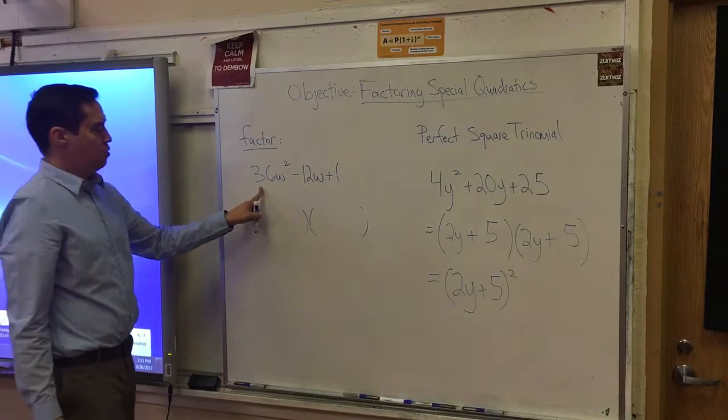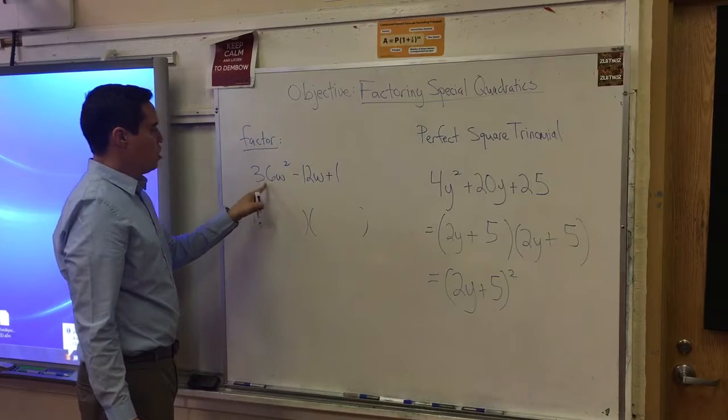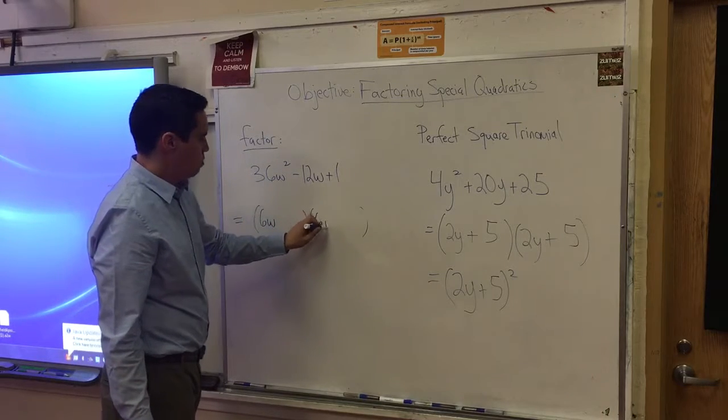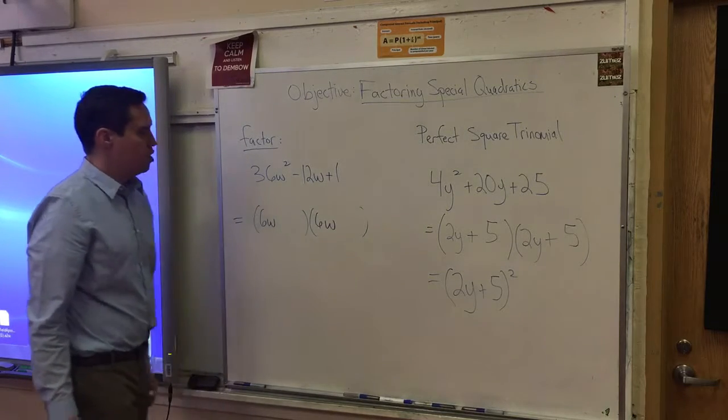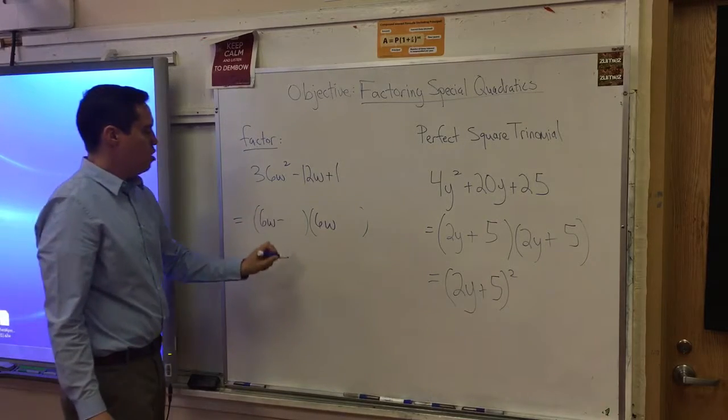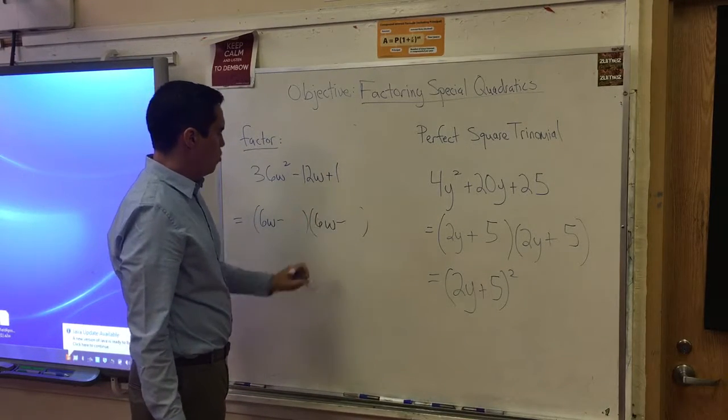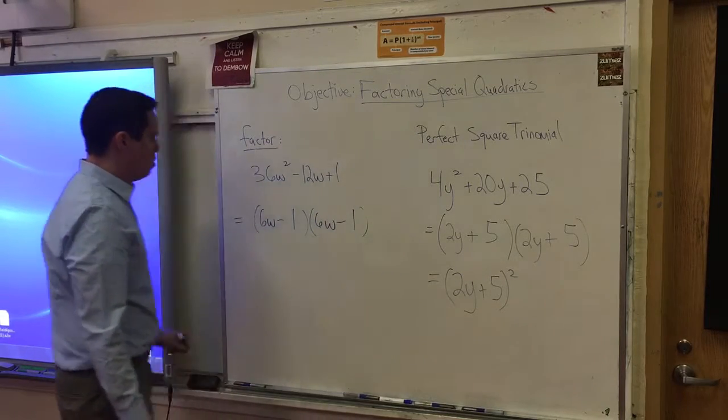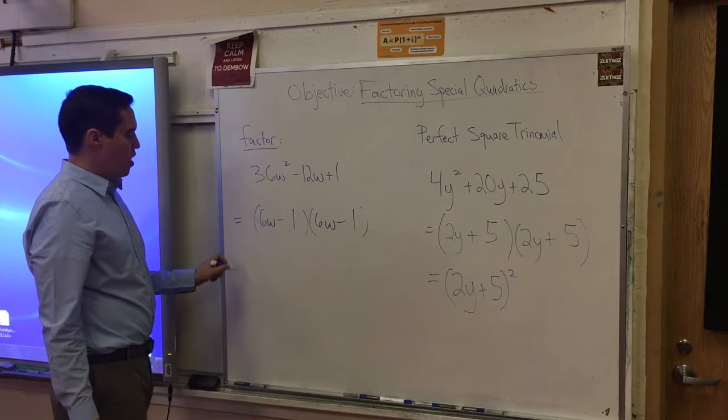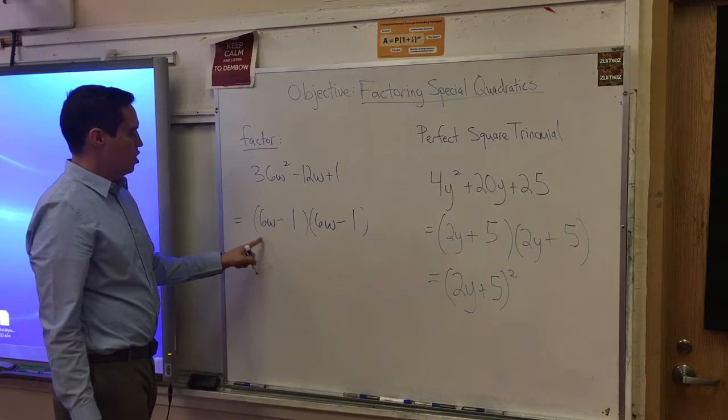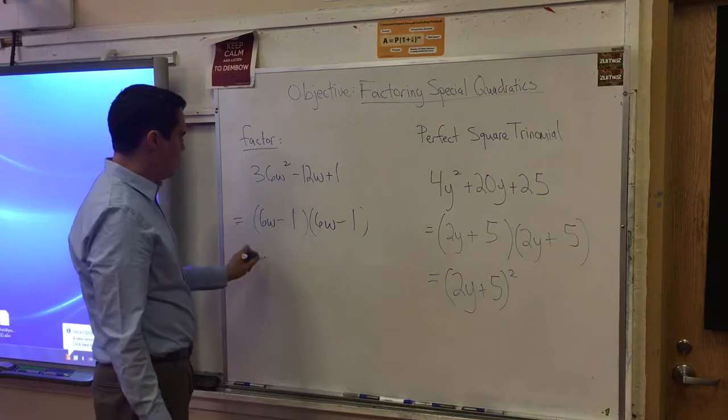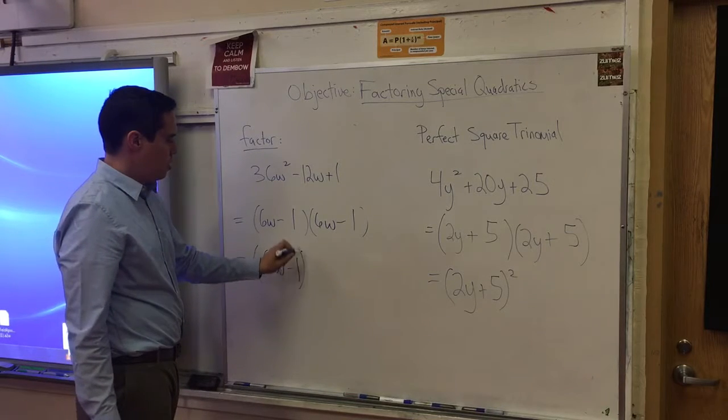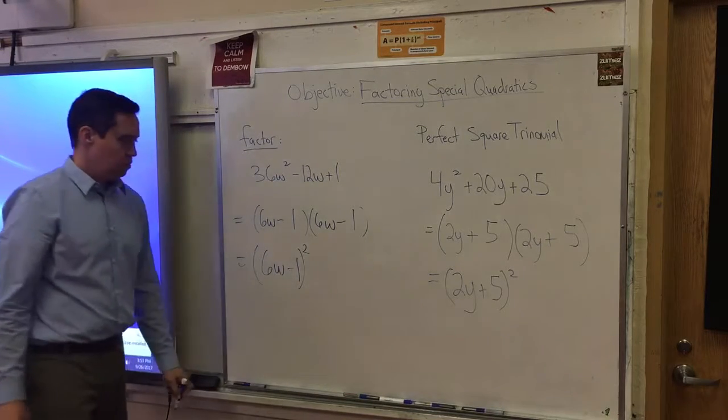This is a perfect square. A quantity times itself equals 36w squared. That quantity is 6w. The last term is positive. The inner term is negative. Therefore, I know that both signs of both constants inside each factor are negative. This can be further simplified, because we have the same thing twice. 6w minus 1 times 6w minus 1. So the shorthand version of that: 6w minus 1 quantity squared.